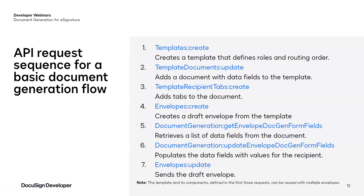Here's a list of the API requests that make up a basic document generation scenario, which Carissa will demonstrate in a few minutes. The first three requests create a template, add a document containing data fields to the template, and add tabs to the document. These requests don't need to be executed every time you want to send envelopes, since a template, once created, is reusable. The fourth request creates a draft envelope that can be sent to a specific recipient. The next two requests use endpoints specific to document generation — one returns a list of the data fields that DocuSign identified in the document, and the other populates the data fields with custom values for the recipient, such as job title and salary. Finally, the last request sends the envelope to the recipient.